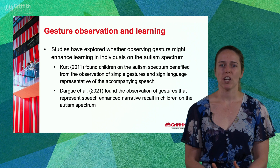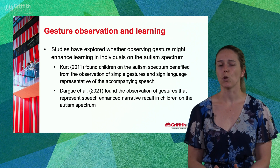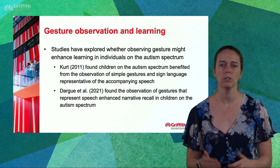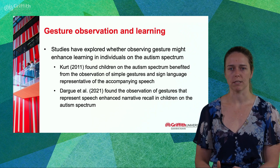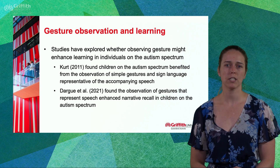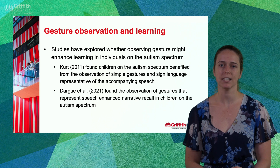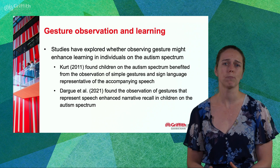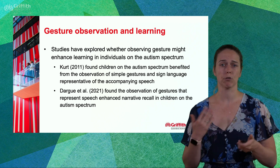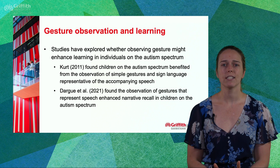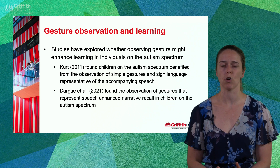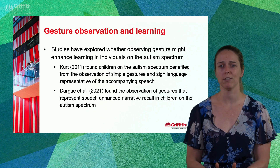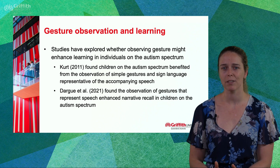So if individuals on the spectrum can comprehend gestures at a comparable rate to their neurotypical peers, perhaps observing others' gestures can benefit learning in individuals on the autism spectrum as well. A couple of studies have explored whether watching another person's gestures — like a teacher's — could enhance learning. In 2011, Curt found that children on the spectrum benefited from the observation of simple gestures and sign language representative of accompanying speech. In 2021, Dargiu and colleagues found that the observation of descriptive gestures enhanced recall of narratives compared to observing no gestures in children on the autism spectrum. So there is some emerging evidence that observing another person's gestures might benefit learning, but we do need more.